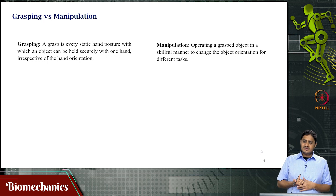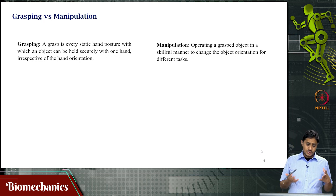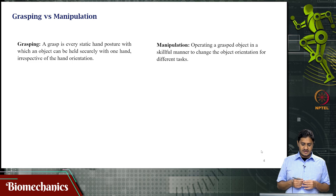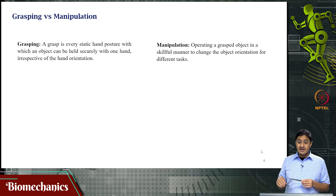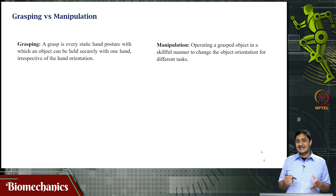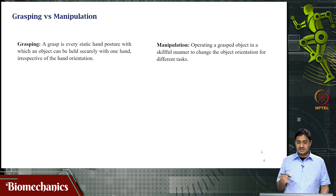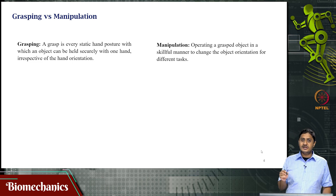Does grasping also include manipulation? The answer is no. A grasp is every static hand posture that can be held securely with one hand, regardless of orientation — holding like this, or like this — these are grasps, various types. Manipulation involves an operation — a change of orientation or slight translation — some kind of movement of the grasped object, operating it in a skillful manner so that the object's orientation and position is slightly altered to perform a purposive or meaningful movement.